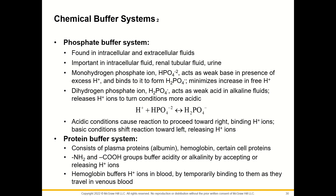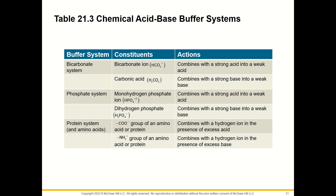The protein buffer system consists of plasma proteins such as albumin, hemoglobin, and certain cell proteins. Amino and acid groups buffer acidity or alkalinity by accepting or releasing hydrogen ions — the amino group is NH₂ and the acid group is COOH. Hemoglobin buffers hydrogen ions in the blood by temporarily binding to them as they travel in venous blood.